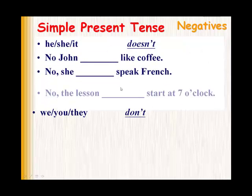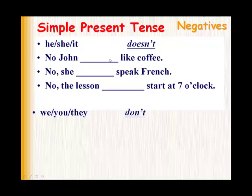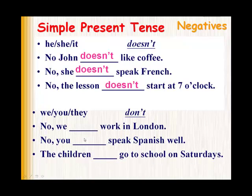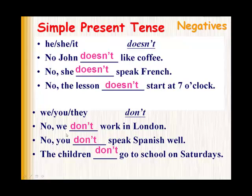Let me repeat again. He, she, and it take doesn't for negatives. For example: John doesn't like coffee; she doesn't speak French; the lesson doesn't start at 7 o'clock. The lesson could be replaced by it, and John could be replaced by he. With don't, here are three examples: we don't work in London; you don't speak Spanish well; the children don't go to school on Saturdays. These are negative sentences with plural subjects — we, you, and the children.